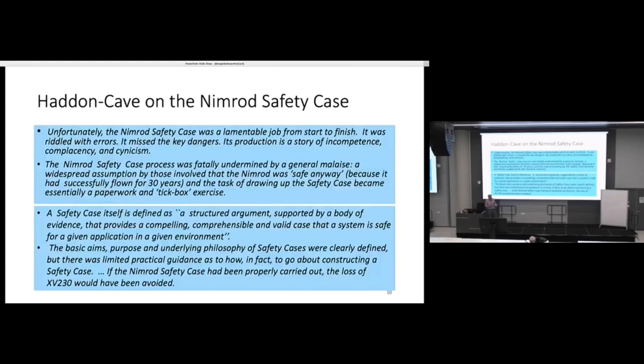The Nimrod safety case was a lamentable job from start to finish. It was riddled with errors. It missed the key dangers. Its production is a story of incompetence, complacency, and cynicism. The Nimrod safety case process was fatally undermined by a general malaise, a widespread assumption by those involved that the Nimrod was safe anyway because it had successfully flown for 30 years. The task of drawing up the safety case became essentially a paperwork and tick-box exercise. This is what a lot of people do with regulations also. They just say, been there, done that. It's kind of meaningless. Often it's done after the fact, which is not what you need to do. You need to think about it as part of the design process. You're designing the assurance argument. You're designing why it works, not how it works.